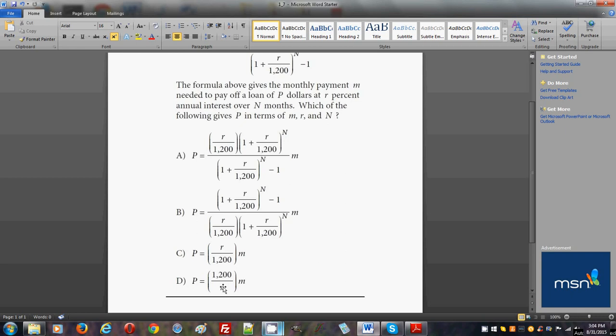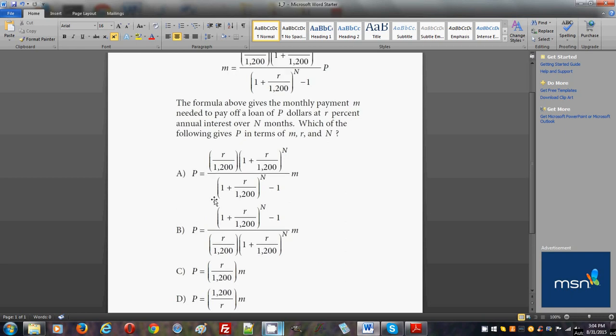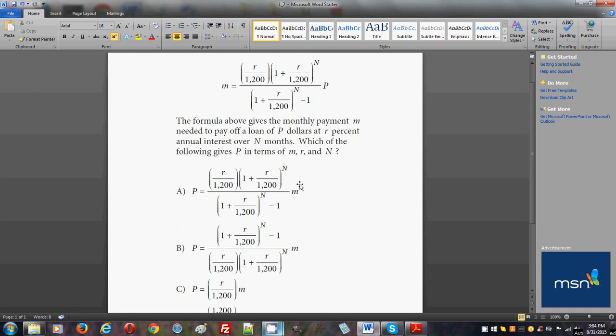Choice A is almost correct except that there's no minus one on the top. The minus one should have been on the bottom. It looks like they're kind of messed up there—they're trying to trick you by keeping the denominator as the denominator when in fact it should become the numerator.